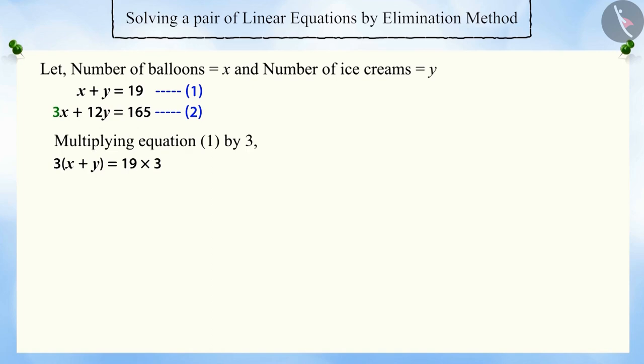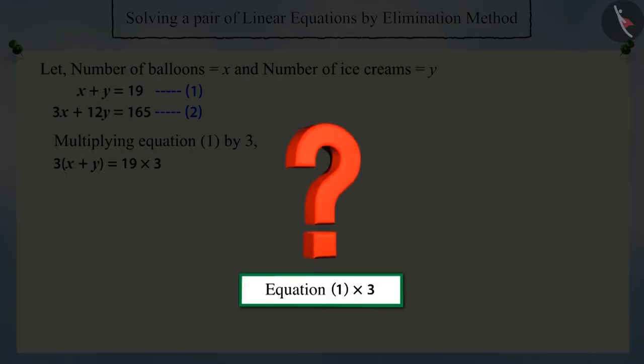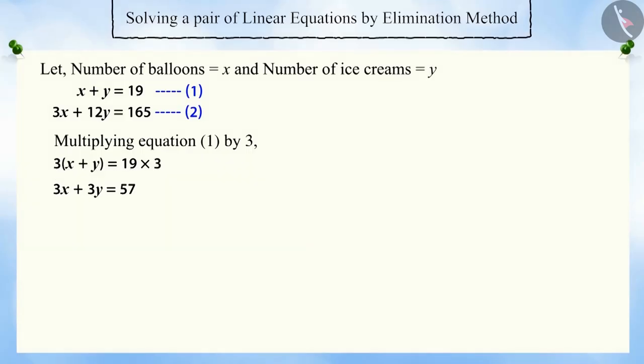Can you multiply equation 1 by 3? Excellent! After multiplying by 3, we get 3x plus 3y is equal to 57, which can be represented as equation 3.